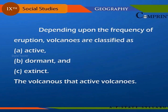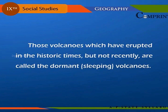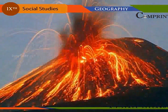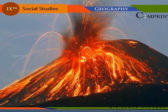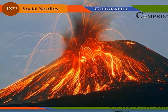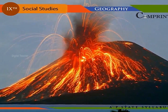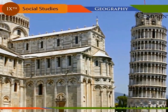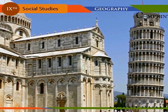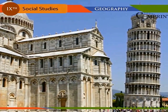Depending upon the frequency of eruption, volcanoes are classified as active, dormant, and extinct. Volcanoes that erupt frequently are called active volcanoes. Those that have erupted in historic times but not recently are called dormant volcanoes. Even volcanoes considered extinct may surprise scientists by turning active suddenly — Mount Vesuvius and Krakatoa, which for many centuries were considered extinct, became active and caused invaluable loss to life and property in Italy and Indonesia respectively.